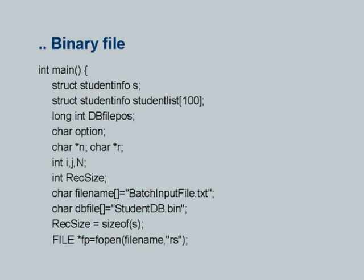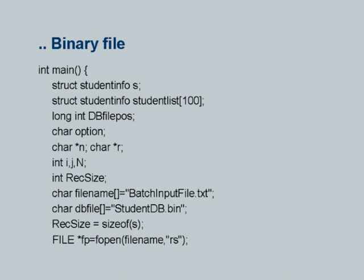When I say rec_size equals sizeof(s), whatever 67 bytes the structure occupies will be calculated at execution and allocated to rec_size, which is a variable of type int. You would have guessed that rec_size is what I will use to describe the amount of data in one unit of record that I want to read or write — I am going to write one record at a time and read one record at a time, but the size of that record is important and is captured here.